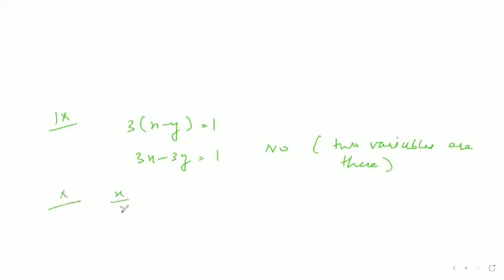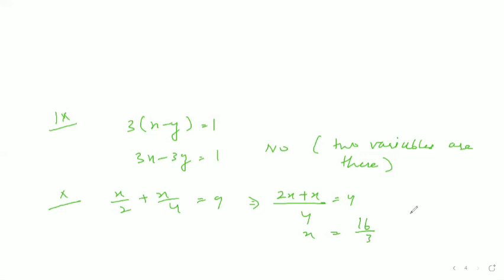Tenth part: x/2 + x/4 = 9. Take the LCM: 2x + x = 4, so x = 16/3. Yes, it is a linear equation in one variable because only one variable is there and the highest power is 1.